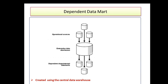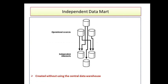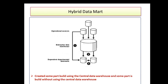Looking at the diagrams: for a dependent data mart, we have operational sources feeding a data warehouse, and on top of that we build dependent data marts. For an independent data mart, there is no data warehouse — data marts are built directly from operational sources. For a hybrid data mart, some data marts are built directly on operational sources while others are built on top of the data warehouse.